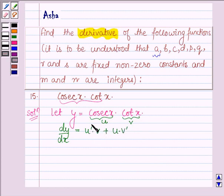That is, first we find the derivative of U, multiply it with V, plus U times the derivative of V. This is the product rule of differentiation.